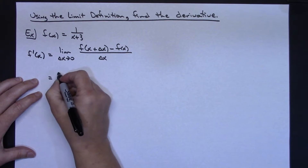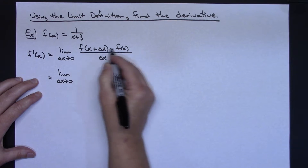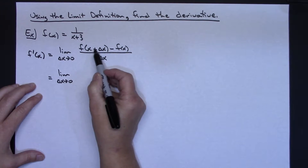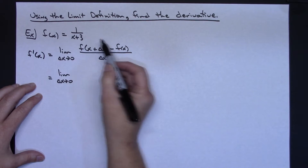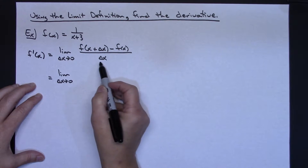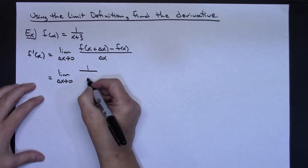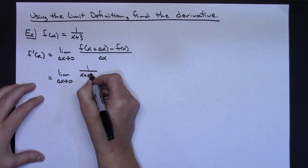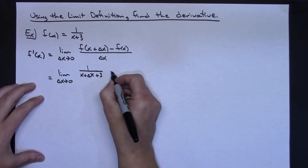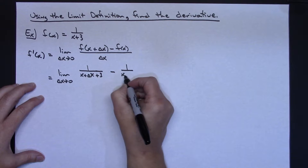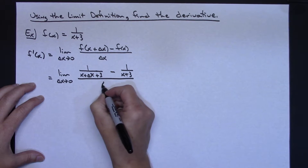I'm going to take the limit as delta x approaches zero and start working out this formula. It says to take x plus delta x and plug it into the function everywhere there is an x, then subtract the entire function and divide by delta x. So I'm going to have 1 over x plus delta x plus 3, minus 1 over x plus 3, all over delta x.